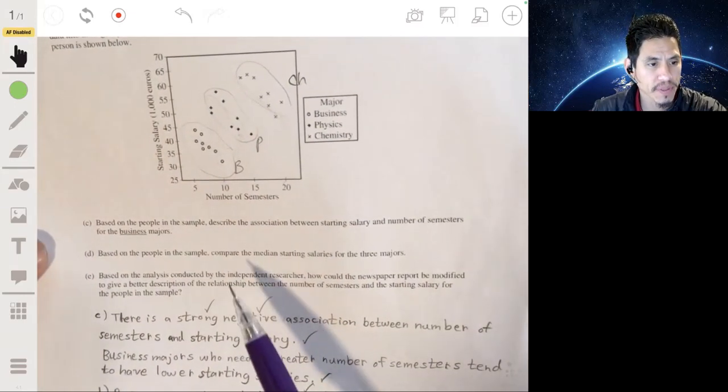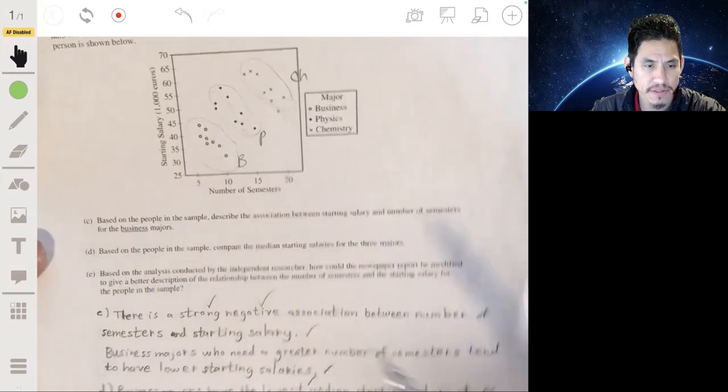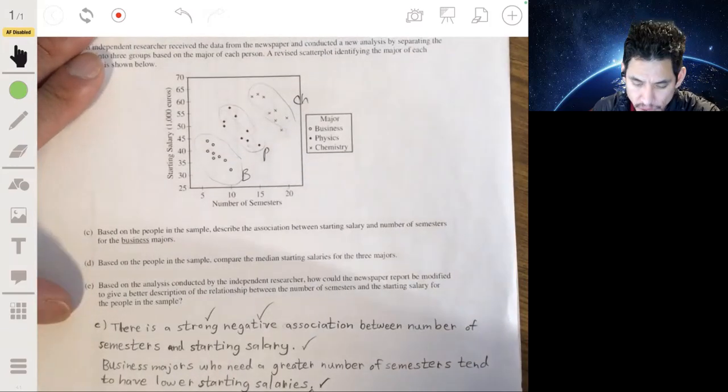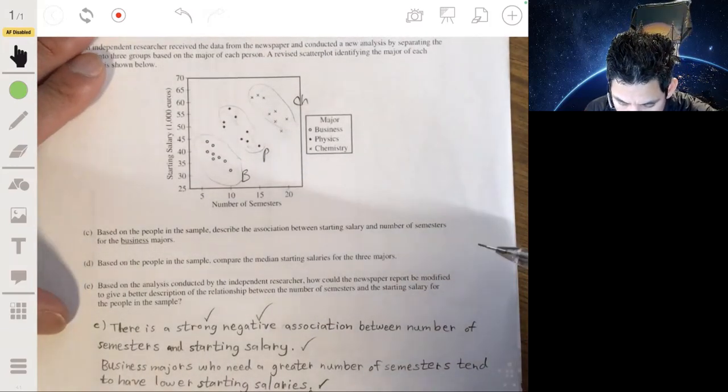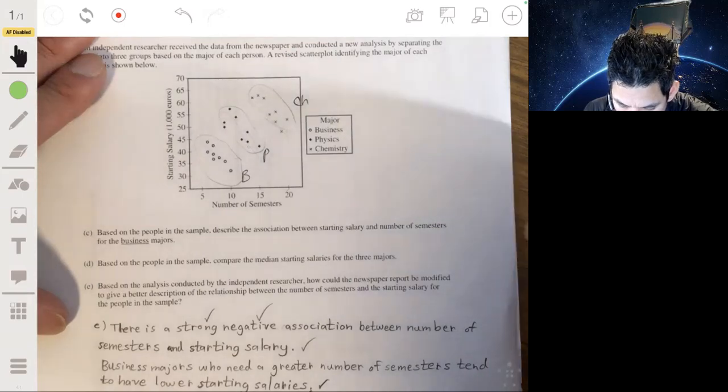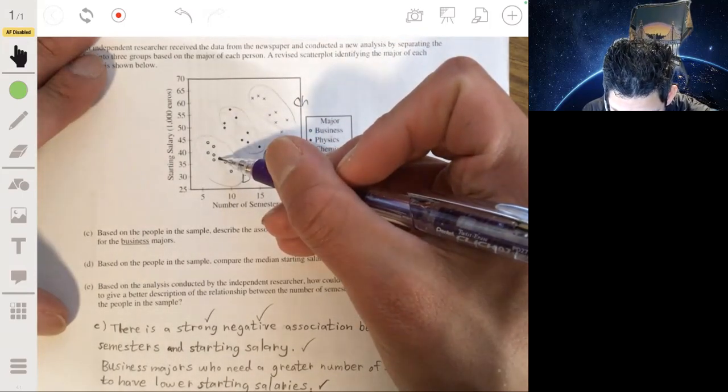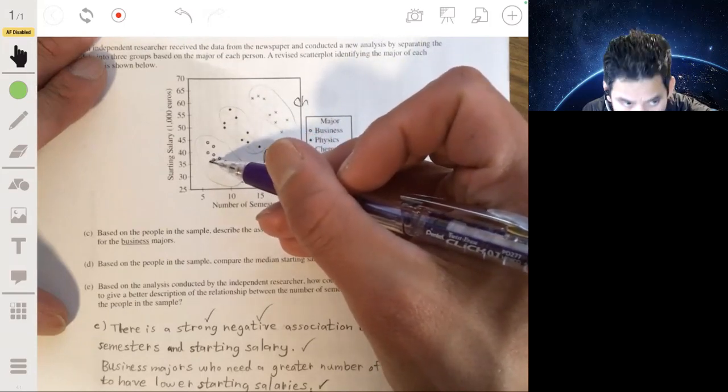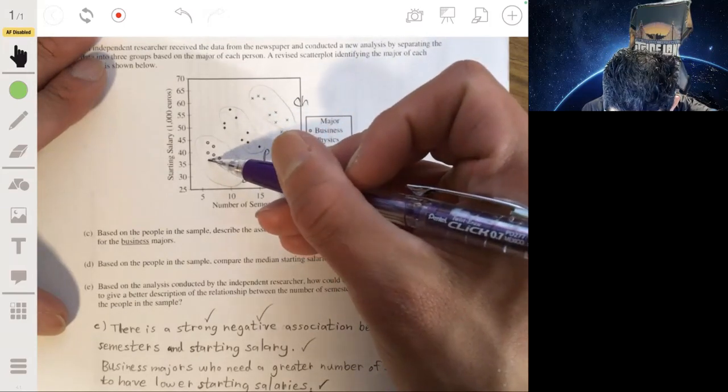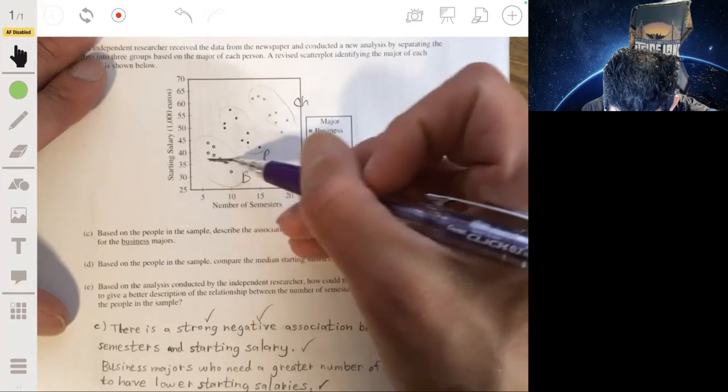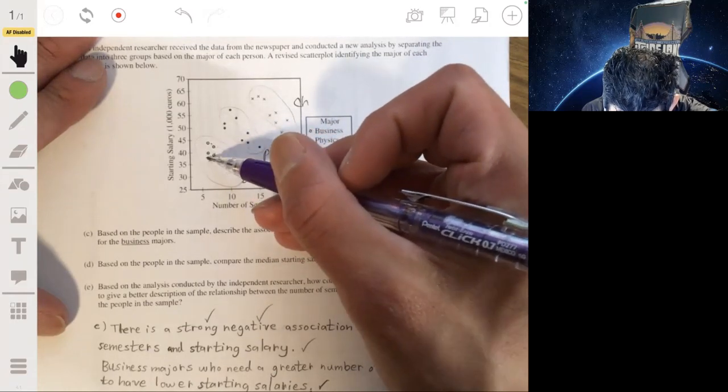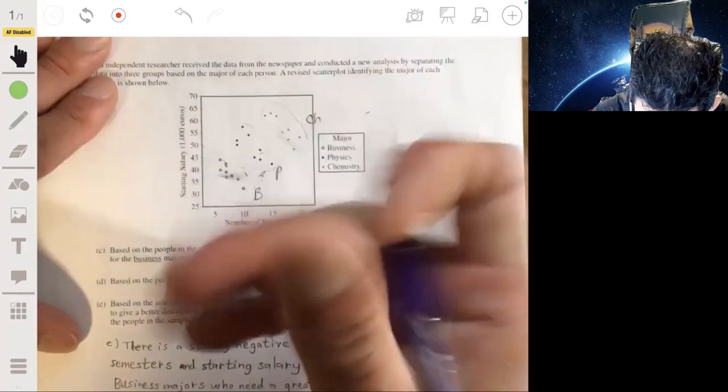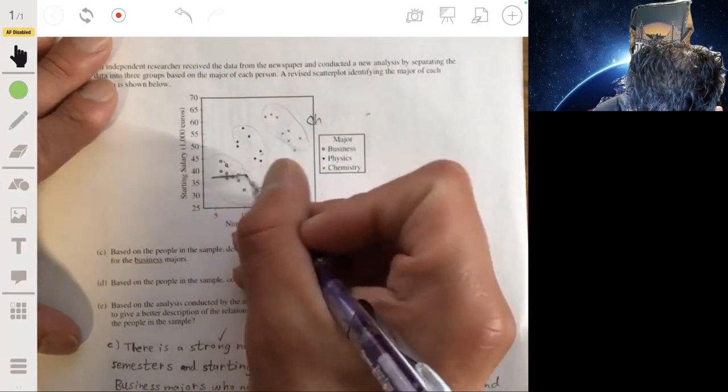Right now D based on the people in the sample compare the median starting salaries for the three majors. Well, I don't want to give it away yet. So the median, again, the middle value, the median starting salary, we'd look at it vertically. So maybe the median starting salary for business majors is something like that. One, two, three, four, five, six, seven, eight. Something like right in here. Well, let me try to make it a little better. Four above, four below, horizontal line. One, two, three, four, one. So this one, the median here for physics.